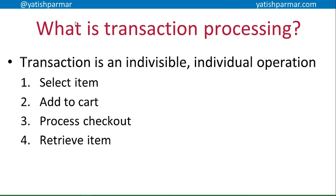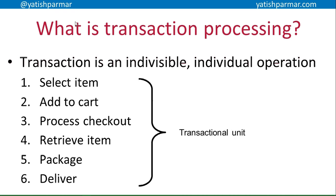Then the item is retrieved in the warehouse, it is packaged, the status is updated, then it's delivered, and when it's successfully delivered the whole unit itself is complete. The process of checkout could be considered a transactional unit as well, because if one transaction within the whole unit fails, then the whole process is a failure. In relational databases, we need to make sure we are carrying out transactions to handle data and keep our system functional.